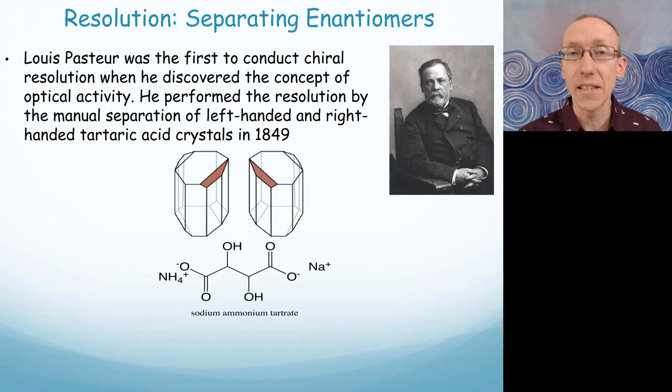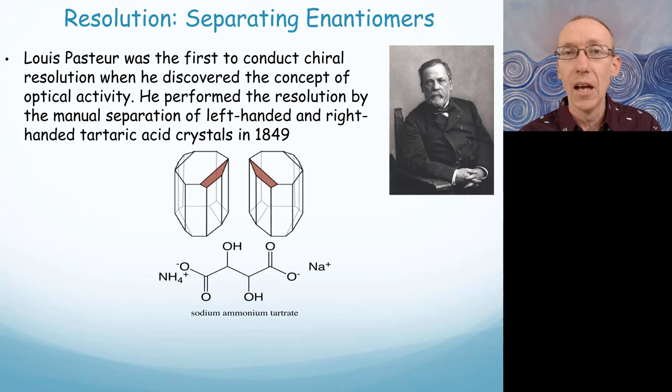Hopefully that gives you a better understanding of chiral molecules, enantiomers, how to separate them, and what diastereomers are — including meso compounds, where we have more than one chiral center but the molecule has a plane of symmetry and is therefore achiral. Thanks for watching.